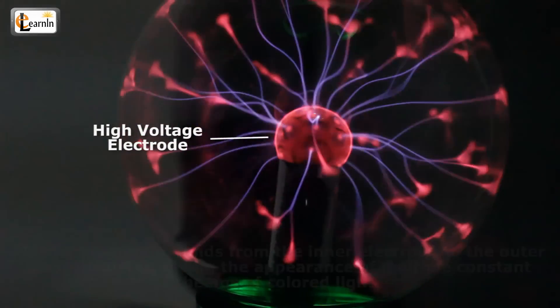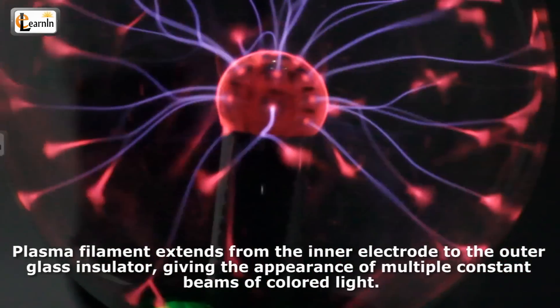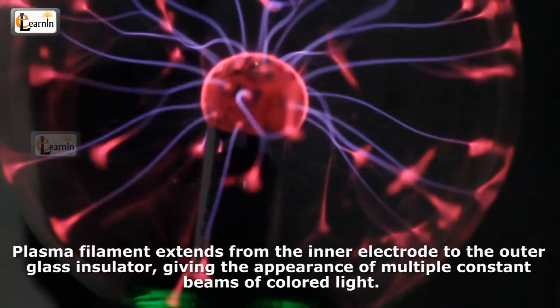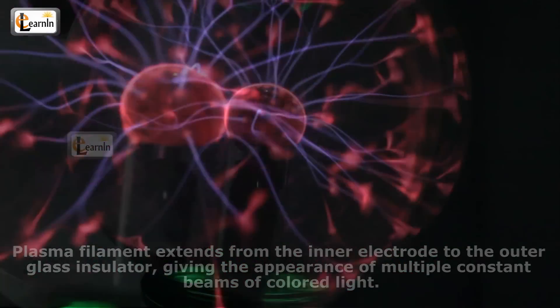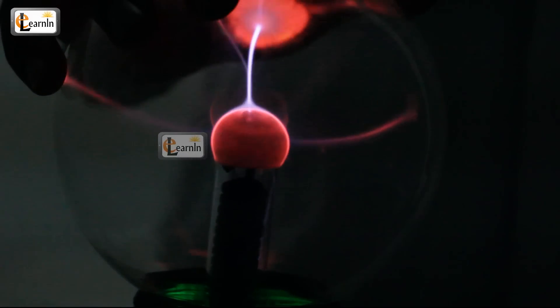In the center of the sphere, plasma filaments extend from the inner electrode to the outer glass insulator, giving the appearance of multiple constant beams of colored light. The plasma lamp emits a high-frequency current, and hence you can see a lot of sparks in it.